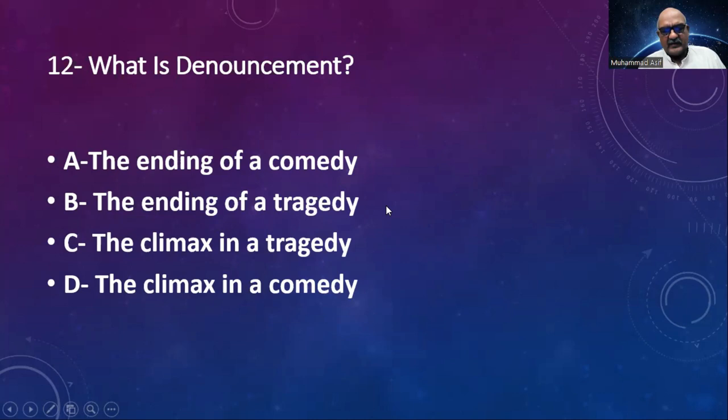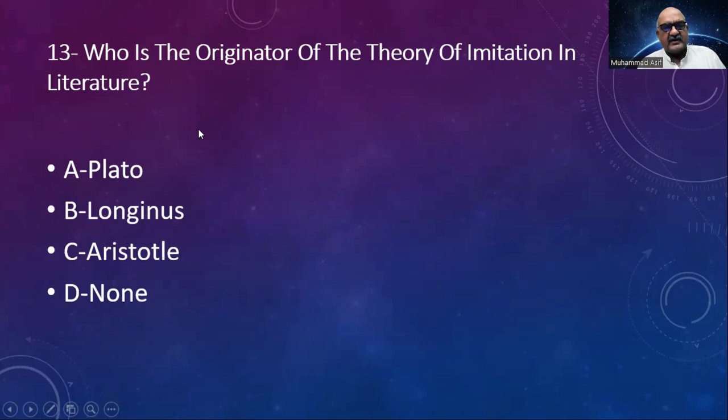Number 13: Who is the originator of the theory of imitation in literature? Options: Plato, Longinus, Aristotle, none. The correct answer is Plato. Number 14: Who was the most illustrious disciple of Socrates? Options: Plato, Plotus, Sophocles, Citrus. Correct answer is Plato.